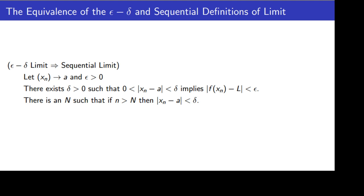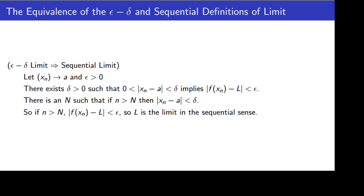Now, since x sub n converges to A, we know that for every positive number — and delta is a positive number — there exists a capital N such that if little n is bigger than capital N, then the absolute value of x sub n minus A is less than that positive number. So we pick the capital N that goes with delta. What that means is that if little n is bigger than capital N, then the absolute value of x sub n minus A is less than delta, and if the absolute value of x minus A is less than delta, that means the absolute value of f of x sub n minus L is less than epsilon.